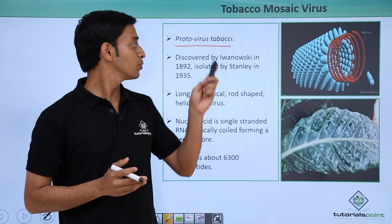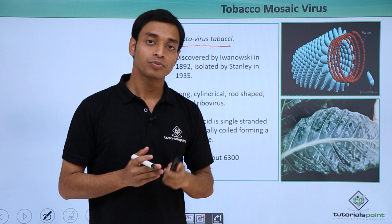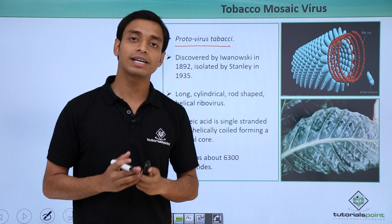This is a typical structure of a TMV virus, and as you can understand, these are infecting the tobacco leaves. The name 'mosaic' comes from the fact that the infection gives a mosaic-like appearance to the leaves, as you can see in this picture.